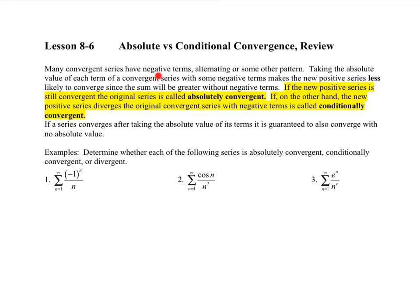Many convergent series have negative terms — alternating or some other pattern. Taking the absolute value of each term of a convergent series with some negative terms makes the new positive series less likely to converge, since the sum will be greater without the negative terms. So this is how we term it: if the new positive series is still convergent, the original series — the one with positive and negative terms — is called absolutely convergent.